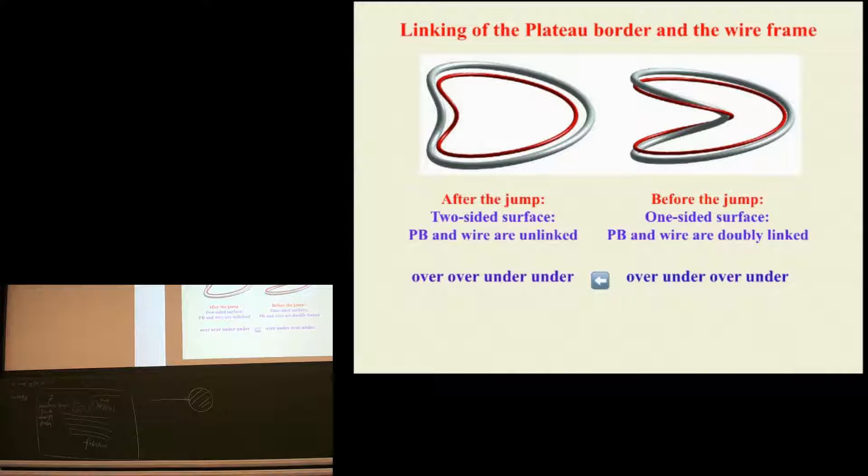But then what's happening, actually, this is before the jump. The plateau border is indicated in red here. And there's an over, under, over, under. So it's actually doubly linked. The plateau border is doubly linked. You can play this sort of thing again with a Möbius strip. And you cut the Möbius strip, not along the middle, but at one third distance. And pretend that that is the plateau border. And cut along one third, all the way. And you go on and on, right, twice round. And you find that that plateau border is doubly linked with the center line of the Möbius strip. So you've got over, under, over, under.